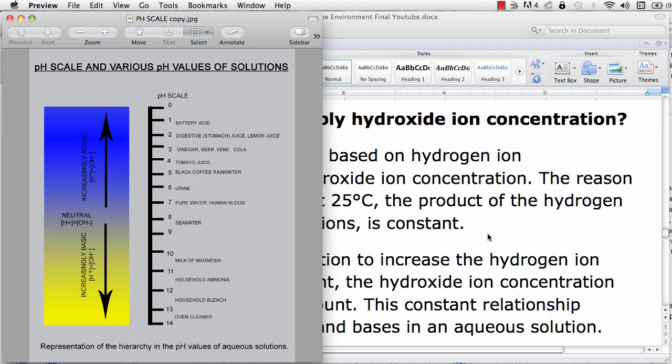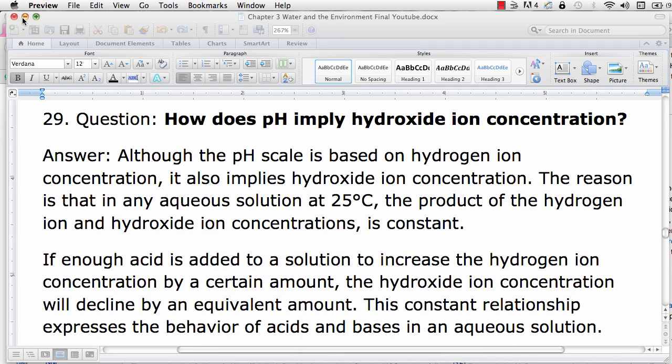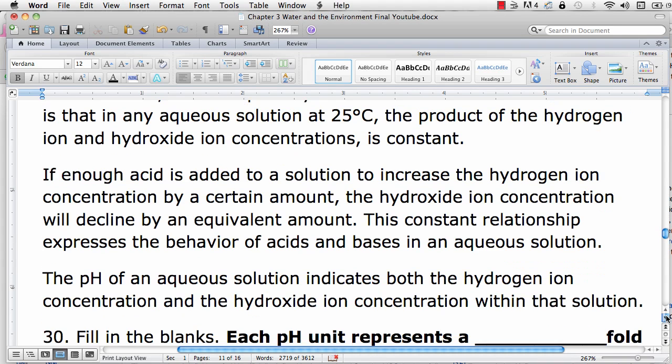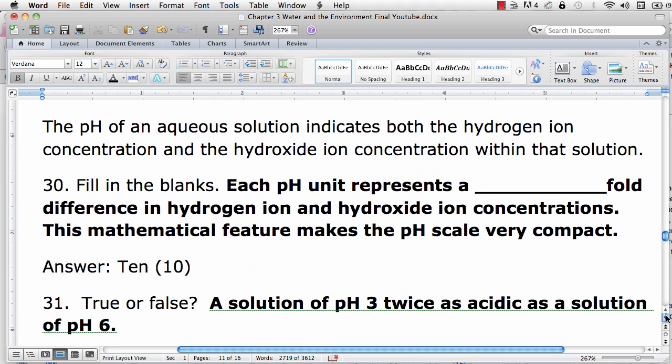This makes the pH scale very compact. If enough acid is added to a solution to increase the hydrogen ion concentration by a certain amount, then the hydroxide ion concentration will decline by the same amount. This defines the behavior of acids and bases in an aqueous solution.